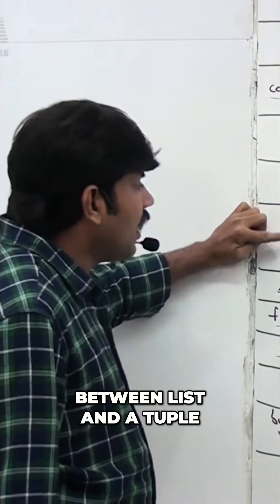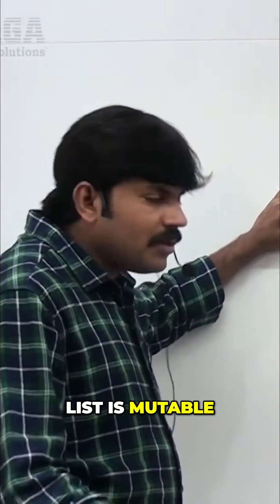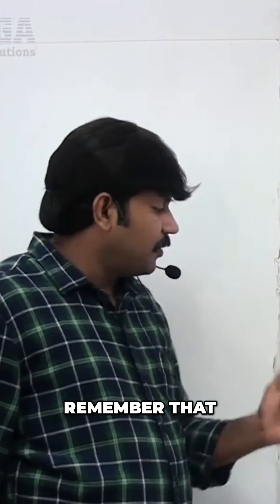What is the difference between list and tuple? List is mutable, tuple is immutable. Remember that.